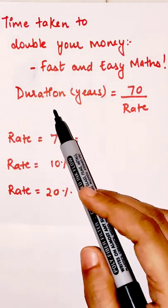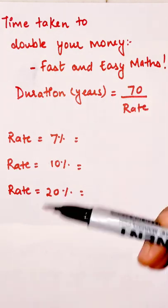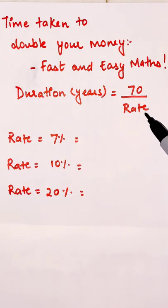So in order to find out the duration at which your money will get doubled, the simple formula is 70 divided by rate.